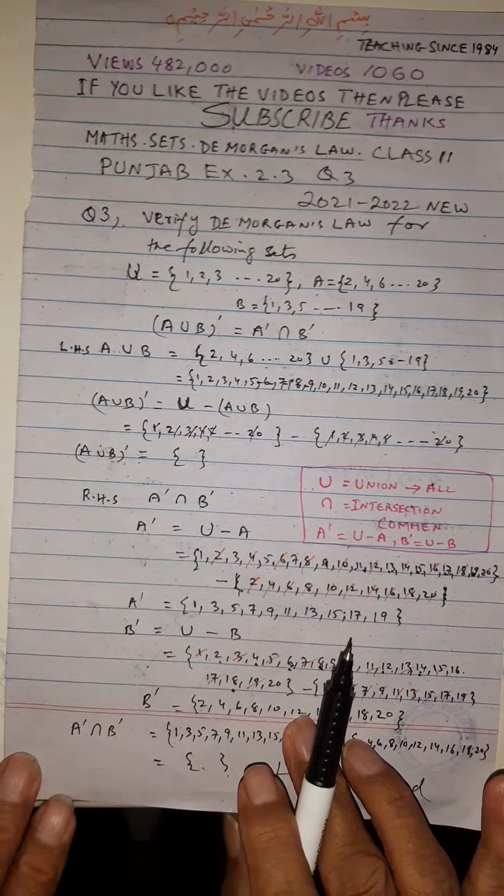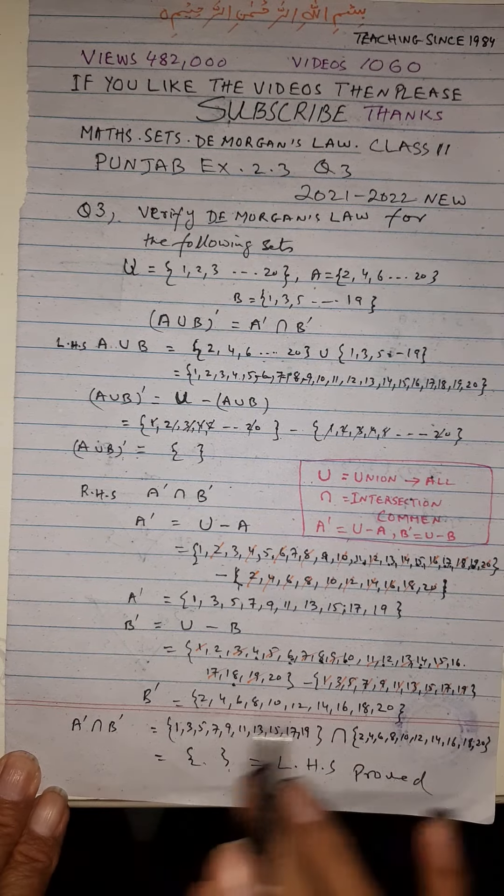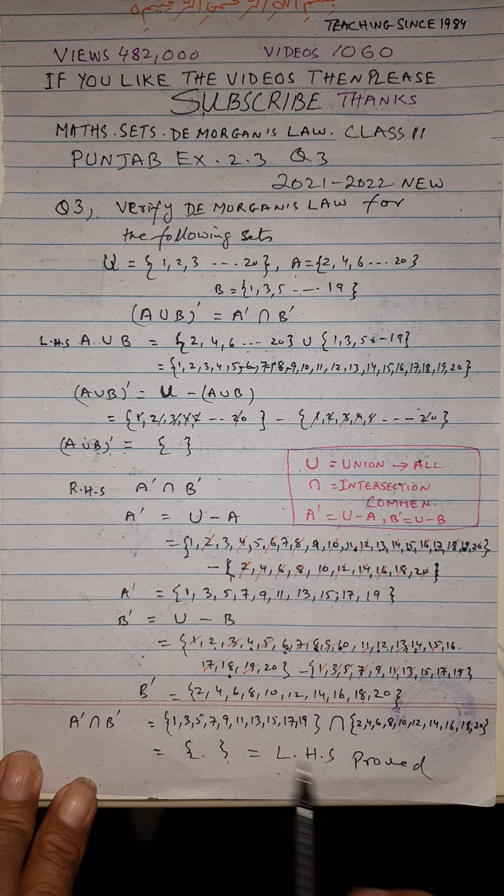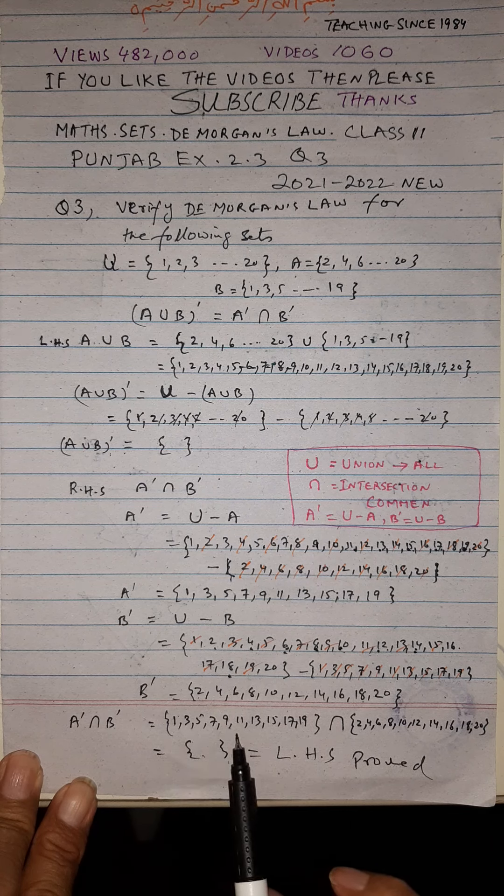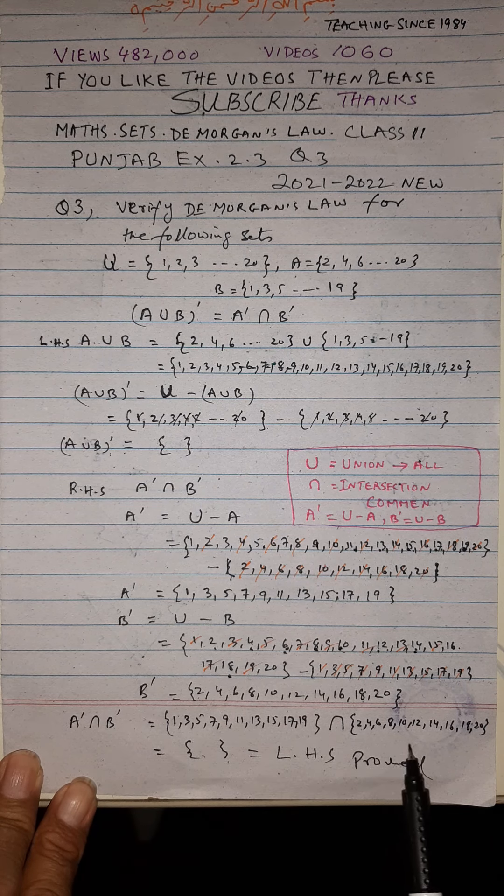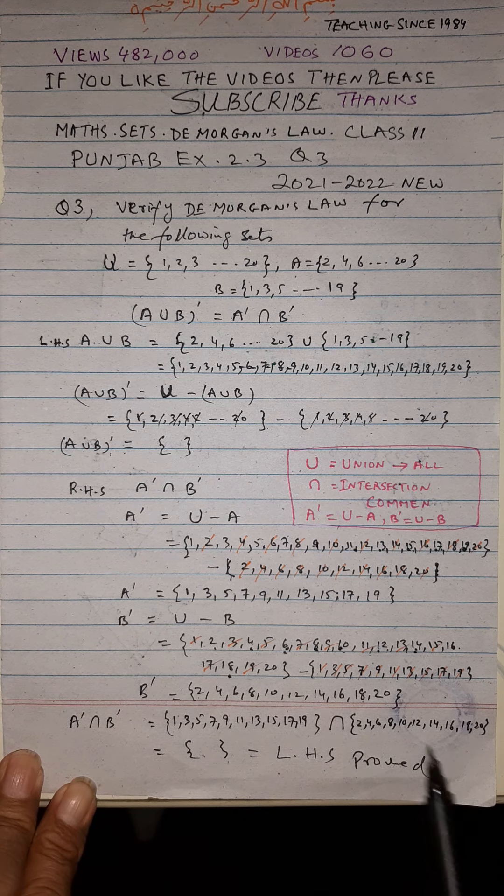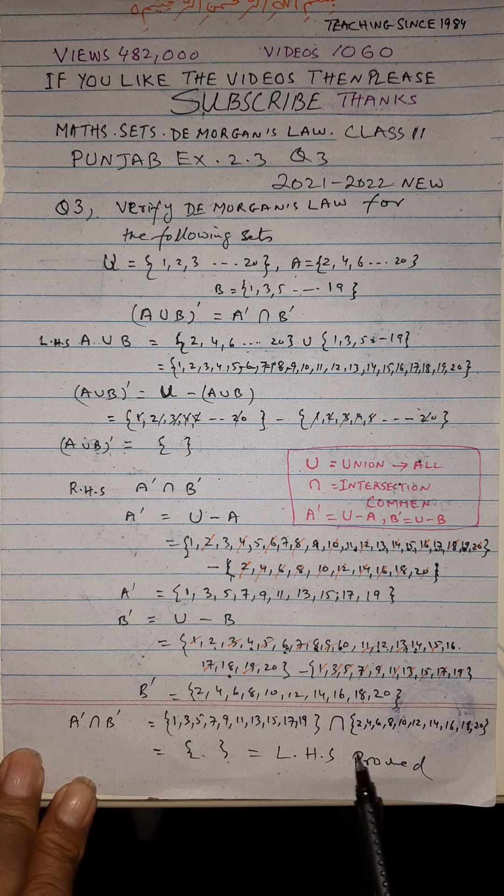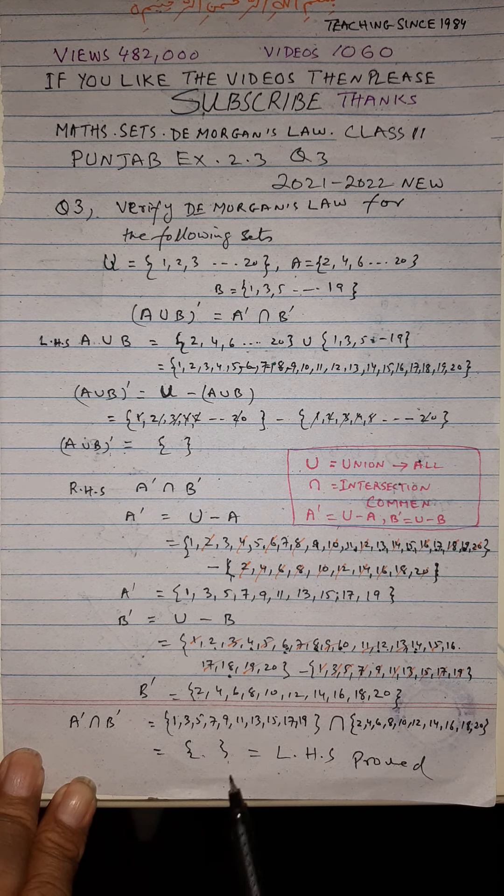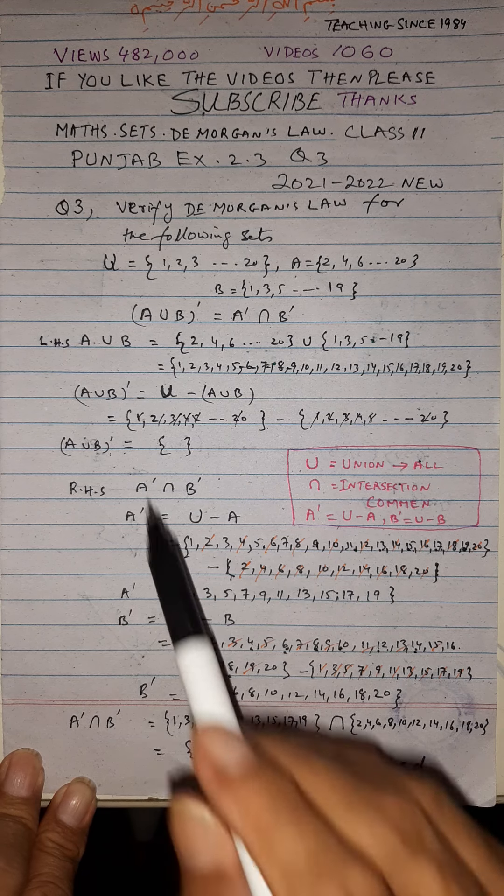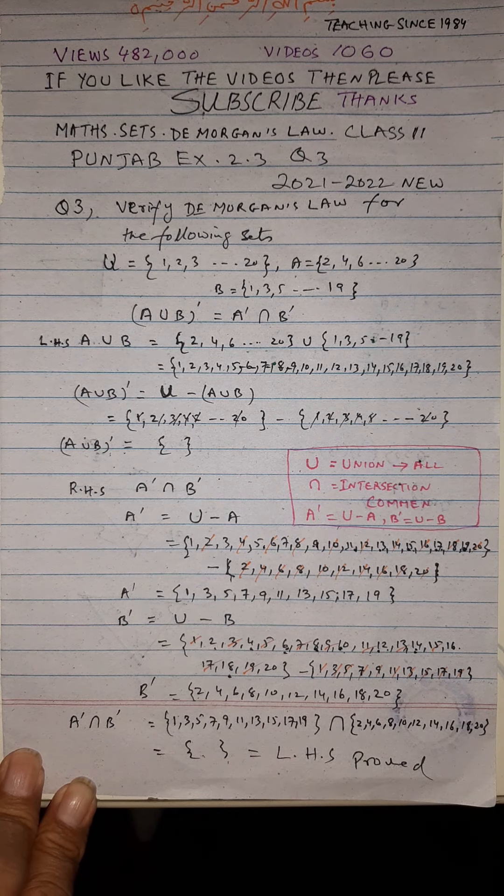The right hand side is A prime intersection B prime. A prime is 1, 3, 5, till 19, and B prime is 2, 4, 6, till 20. This is odd numbers, this is even numbers. There is no common number between them. Therefore, the intersection of both will be the null set. This equals the left hand side, and hence proved.